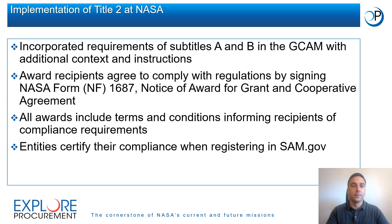NASA has incorporated the requirements in Title II, Subtitles A and B into the GCAM, NASA's agency-wide grants policy document, which provides additional context and instructions to facilitate compliance across the agency. Entities that receive a NASA grant or cooperative agreement agree to comply with the regulations in Title II by signing NASA Form 1687, which explicitly states that 2 CFR 1800 and thereby 2 CFR 200 is applicable to the award. Additionally, entities certify that they will comply with all applicable federal regulations when they register in SAM.gov.